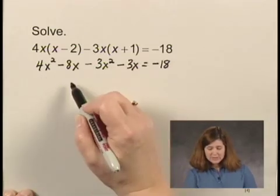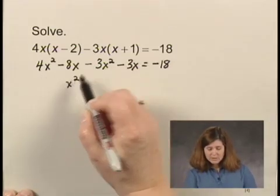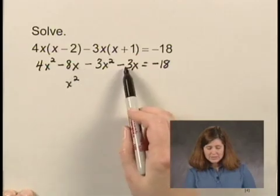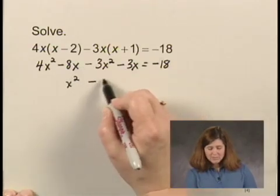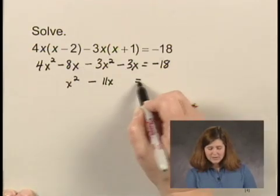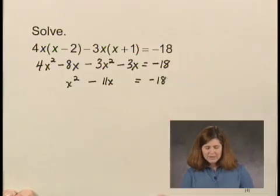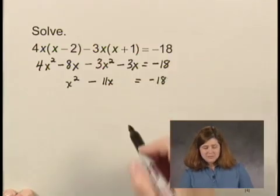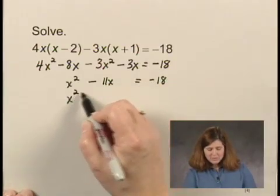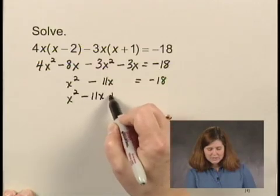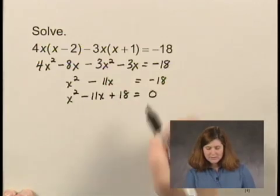4x squared minus 3x squared is x squared. Negative 8x minus 3x is minus 11x, and that equals negative 18. And then let's add 18 to both sides of the equation. We have x squared minus 11x plus 18 equals zero.